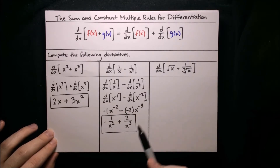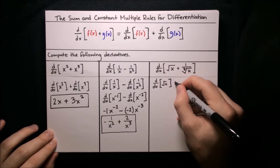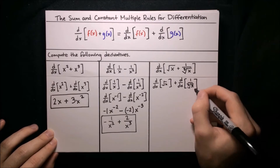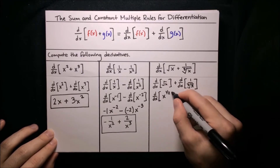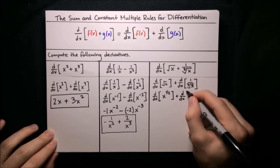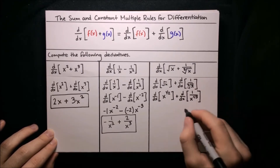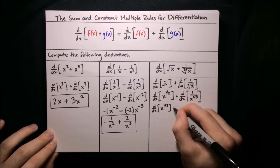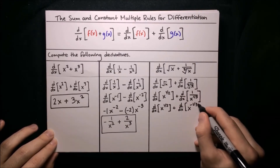Lastly, let's compute the derivative of the square root of x plus 1 over the cube root of x. Our strategy is again to apply the sum rule to split up that derivative, differentiating the first term and the second term independently. To apply the power rule, we write root x as x to the 1 half. For 1 over cube root x, first write it as 1 over x to the 1 third, then as x to the negative 1 third.